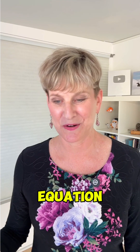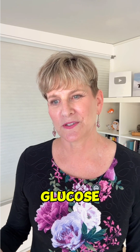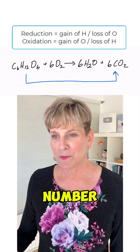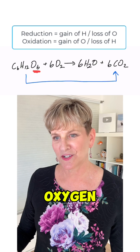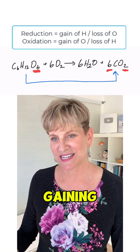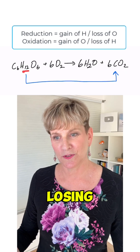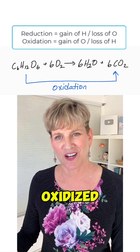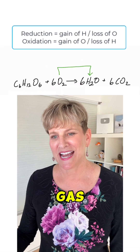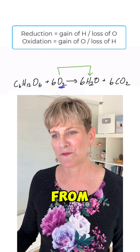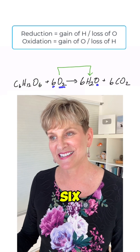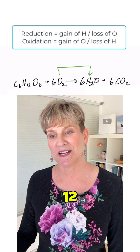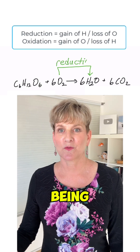Now that we can see in this equation. Let's look at glucose — glucose to CO₂. The number of atoms: oxygen is going from 6 to 12, so it's gaining. Hydrogen, we're losing 12 to 0. So glucose is being oxidized. What about oxygen gas to water? Oxygen is going from 12 atoms to 6. Hydrogen is going from 0 to 12. So oxygen is being reduced.